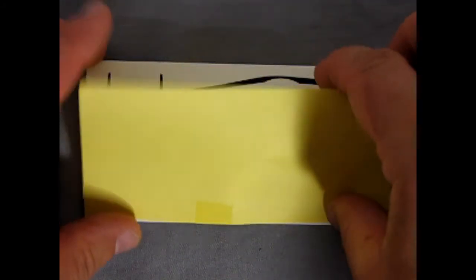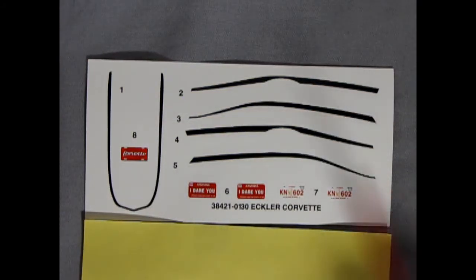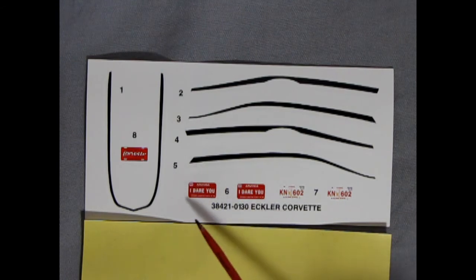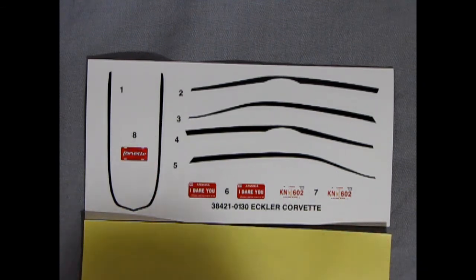And last but not least, we have our decal sheet, and it's time for the big reveal. Now here, these may only look like black stripes, but they are actually black with a white border around them, which would be very groovy for the vintage. Here we have some Arizona I Dare You license plates, as well as some Hawaii KN602s, and our Corvette magazine style license plate. And that completes our look at the AMT Ertl 1976 Chevy Corvette Street Custom.